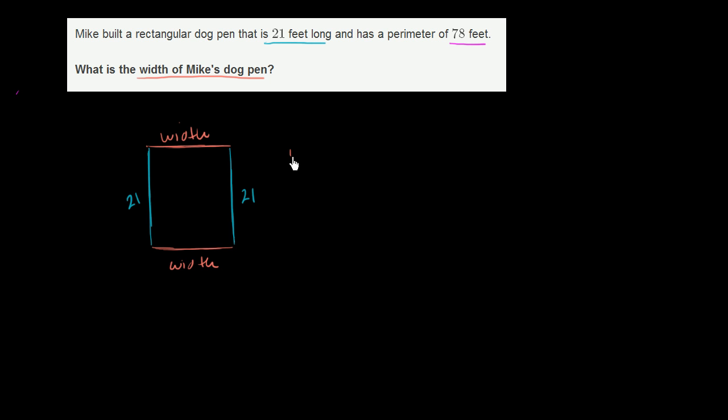So the perimeter is going to be the width plus the width, plus the two lengths, plus 21, plus 21. This will give us the distance if we go around this rectangular dog pen. And they tell us that this thing needs to be equal to 78 feet. Needs to be equal to 78.